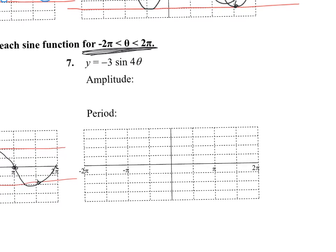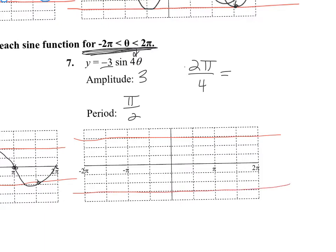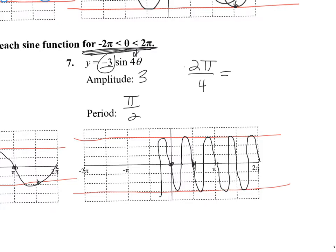Number 7: the amplitude is positive 3, even though there's a negative sign. To find the period, I do 2π over B, which is 4, so the period is π/2. My amplitude goes between 3 and negative 3, and one cycle fits between 0 and π/2. I start here going down because it's negative, following the pattern: 0, min, 0, max. So you have two cycles within π, or one cycle within π/2 — drawing a u and an upside-down u, and keep going.